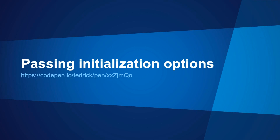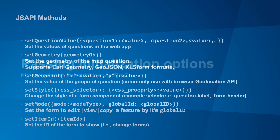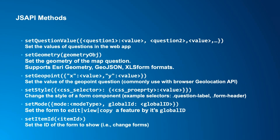So we just saw creating a set of default options: setting values to questions, altering the display of the form, and having a function fire when the form loads to feed results back into the form. The JS API also has a series of methods to interact with the form. We have setQuestionValue for non-map questions, which takes an object so you can provide multiple question values at once. setGeometry accepts geometry in Esri JSON, GeoJSON, or XLS form coordinate format. setGeopoint is a helper for just X and Y values.